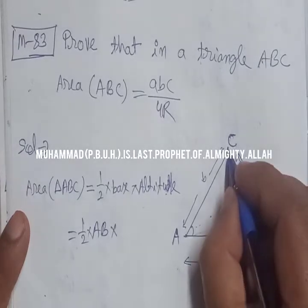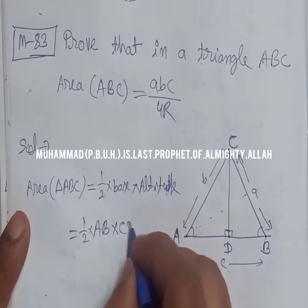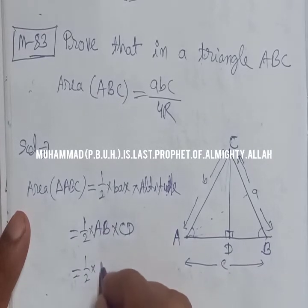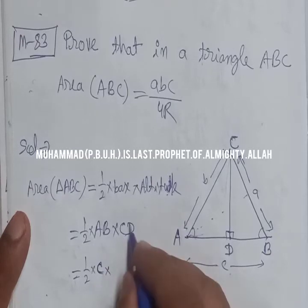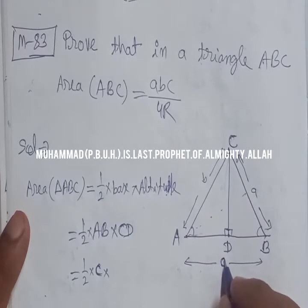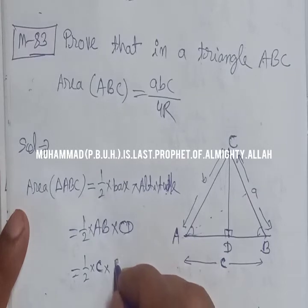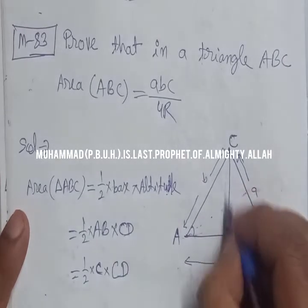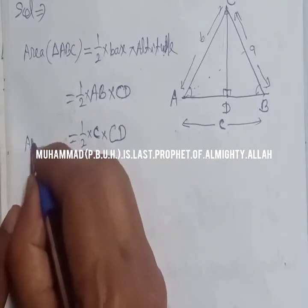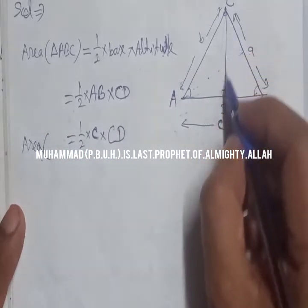The foot of the perpendicular from C to AB is point D, so the altitude is CD. Because AB is equal to small c, I write area = one-half times c times CD. We now need to find the value of CD, which we can find by using the definition of sine.